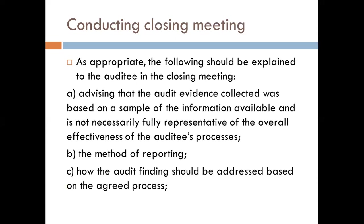As appropriate, the following should be explained to the auditee in the closing meeting: advise that audit evidence collected was based on a sample of the information available and is not necessarily fully representative of the overall effectiveness of the auditee's processes. The auditor should let the auditee be aware that if another auditor conducts this audit, that does not mean new non-conformities will not be discovered.